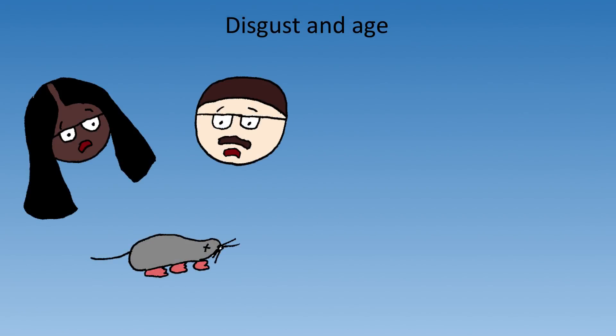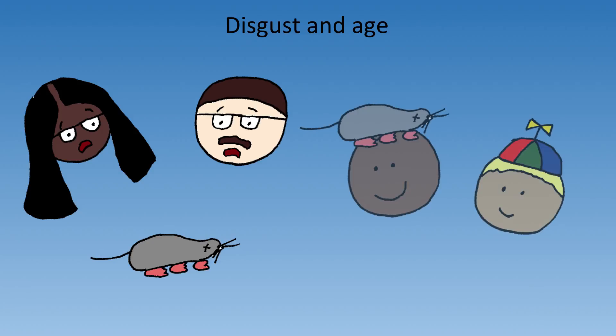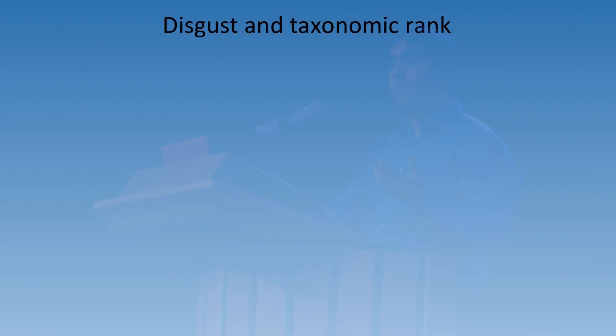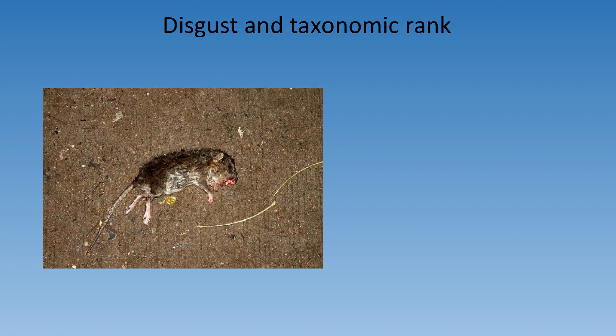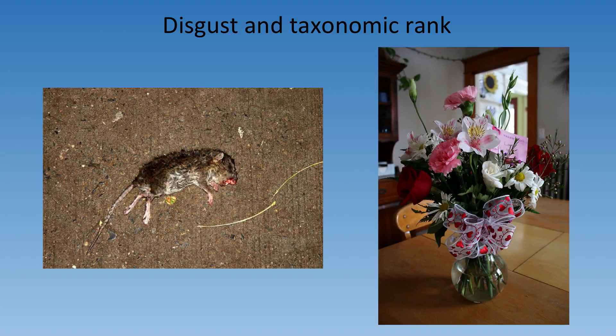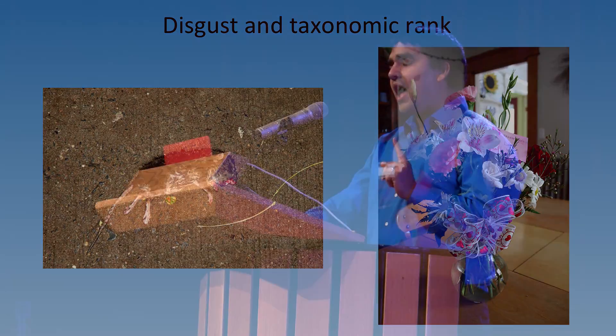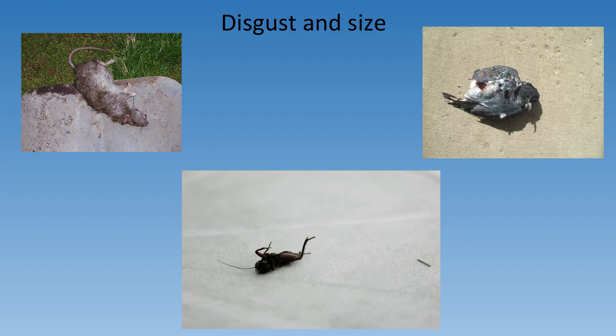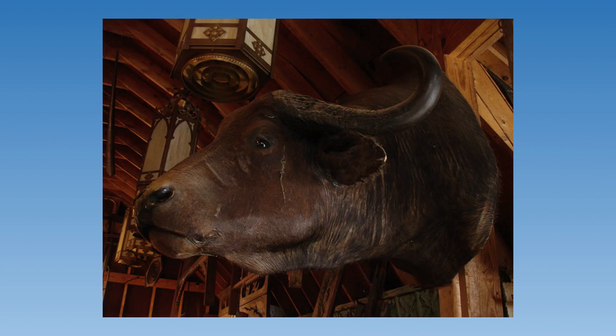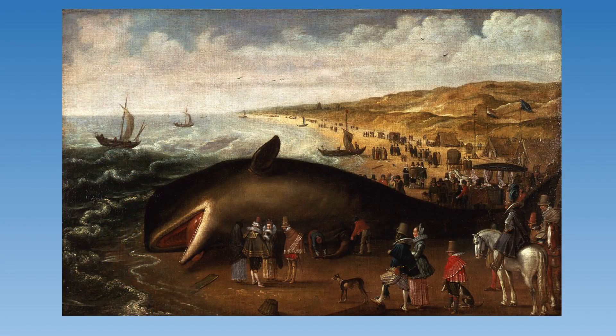We see that disgust is more prominent in adolescents and adults as opposed to in infants and children. We see that disgust is brought out by dead bodies of animals, as opposed to the dead remains of other organisms. And we see that disgust is brought out primarily by small animals. Large animals often produce no disgust at all, or even will attract humans towards them.